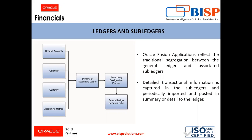A ledger determines the currency, the chart of accounts and calendar, processing options and accounting methods for its associated subledgers. Each accounting setup requires a primary ledger and optionally one or more secondary ledgers and reporting currencies. The number of ledgers and subledgers are unlimited and they are determined by our business structure and the reporting requirements.